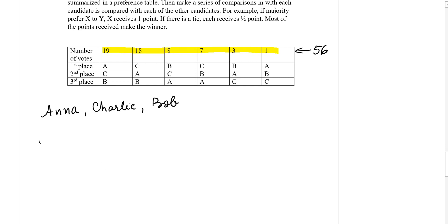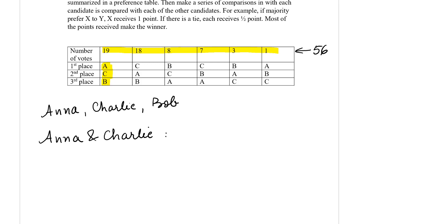The first comparison we are going to make is Anna versus Charlie. We look at each column in the table and find where Anna is ranked above Charlie. In the first column, Anna is in first place while Charlie is in second place, so Anna is above Charlie — that gives us 19 points.